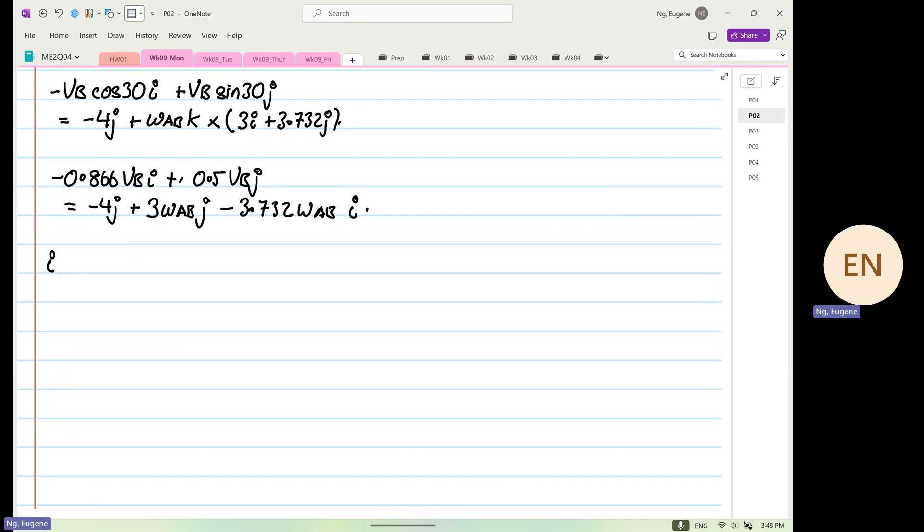Then we're going to do I component. So minus 0.866 VB, and this will be equal to minus 3.732 Omega AB. So now VB will be equal to 3.732 divided by 0.866, which is 4.309 Omega AB.